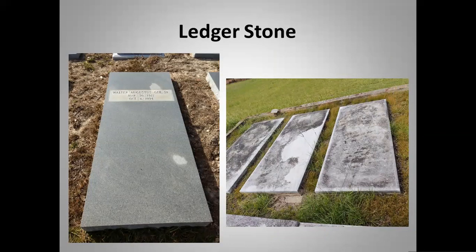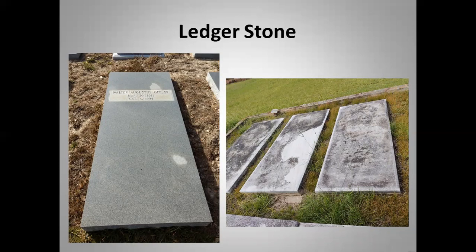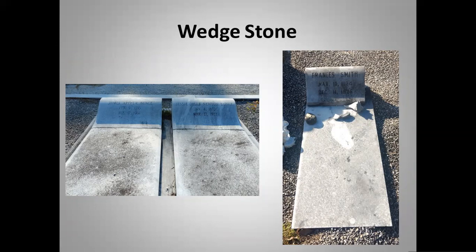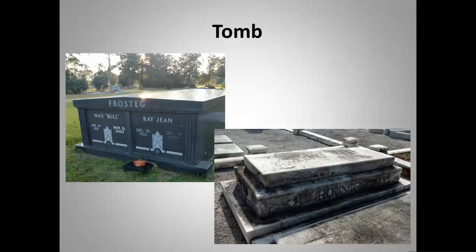Ledger stones are flat to the ground and basically cover where the grave is. In some cemeteries you see almost only these stones, and sometimes older ledger stones will have a headstone added at a later date. Wedge stones have a ledger stone with a rounded wedge going up at the top — others call these bedstones because they look like a bed with a pillow. On the right, this is a child's grave with seashells and stones on it as mementos left by family.